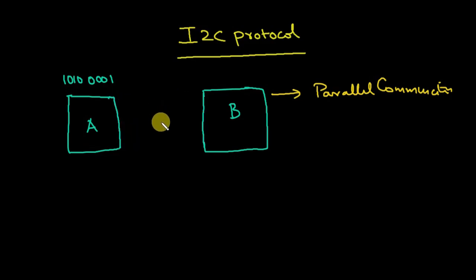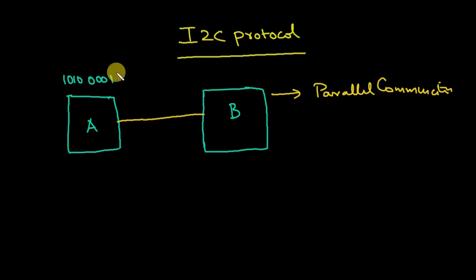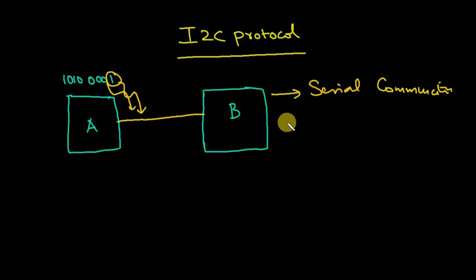In serial communication we need only one wire. How are eight bits transferred through one wire? Simple — we send bit by bit. First we put one on the line, then after it reaches B we output another zero, and so on. Compared to parallel communication it is slow in data transfer, because in parallel all eight bits transfer at once, while serial takes more time. But serial communication is cheaper.